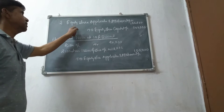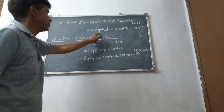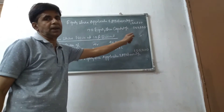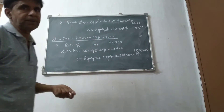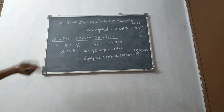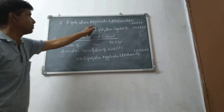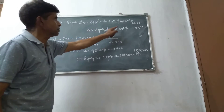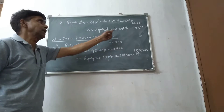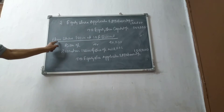Equity Share Application and Allotment Account, to Equity Share Capital Account, 1 lakh. Next, Equity Share Application and Allotment Account, to Equity Share Capital Account, 1 lakh.